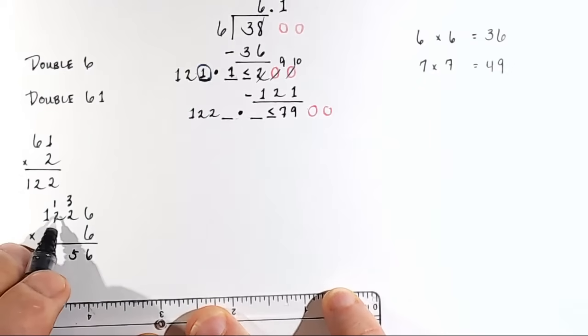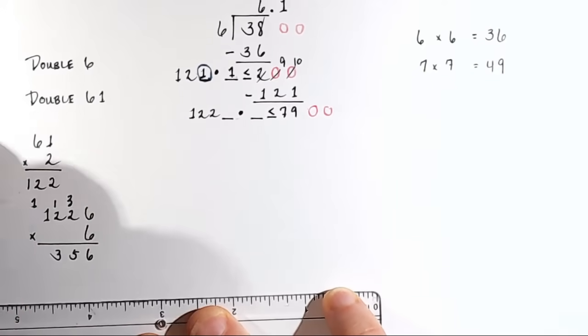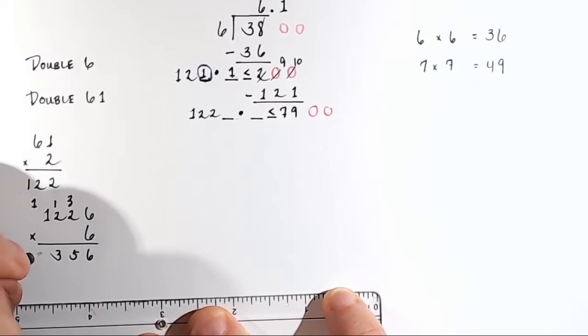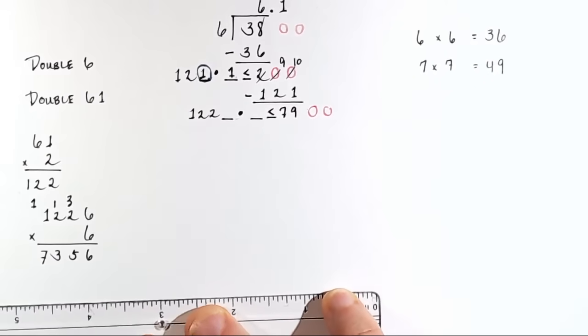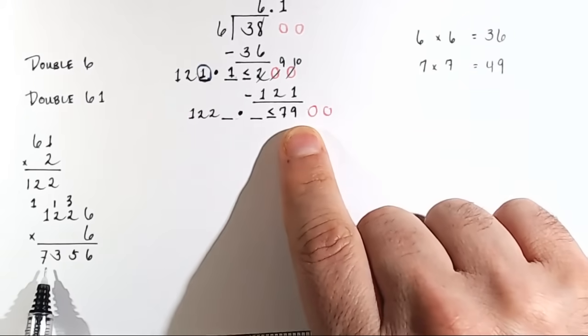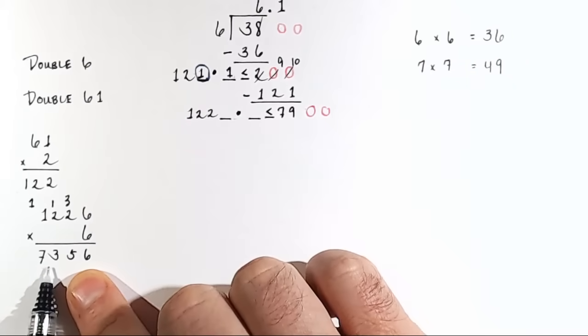6 times 2 is 12, plus 1 is 13. Carry the 1. 6 times 1 is 6, plus 1 is 7. All right? So you see here, we couldn't do 1227 times 7 because it would be bigger than 7,900. This is as close as we're going to get.